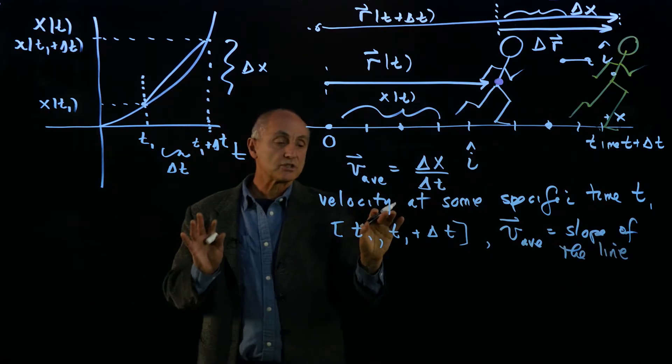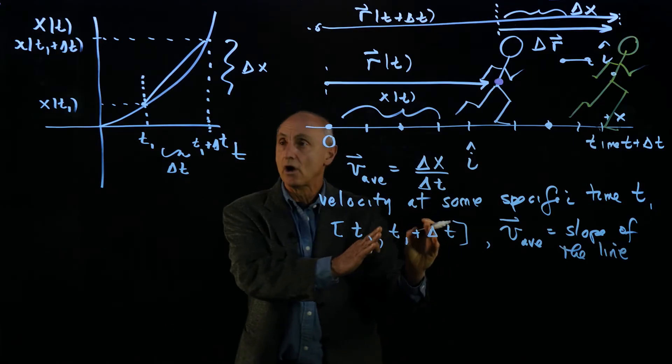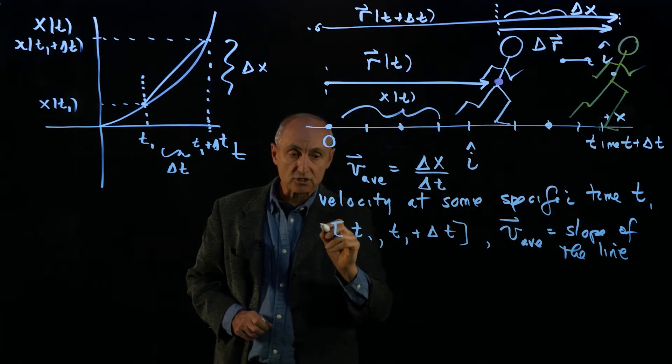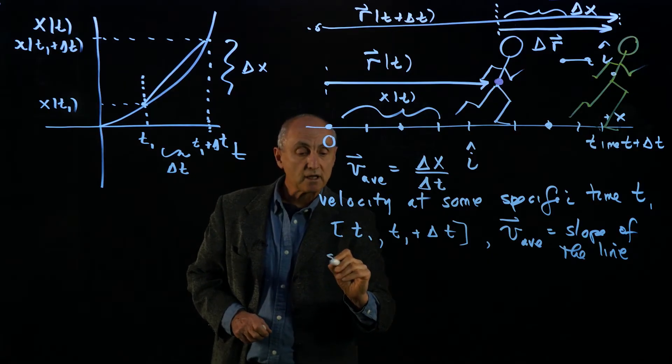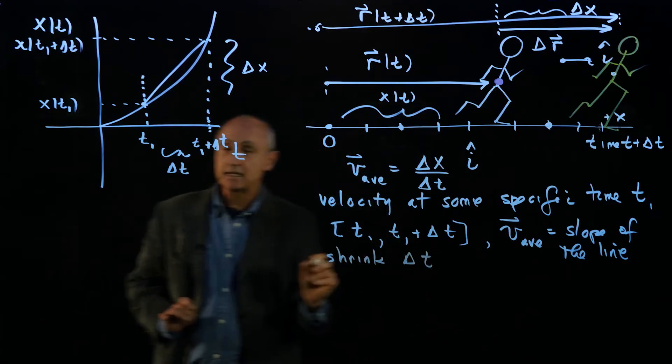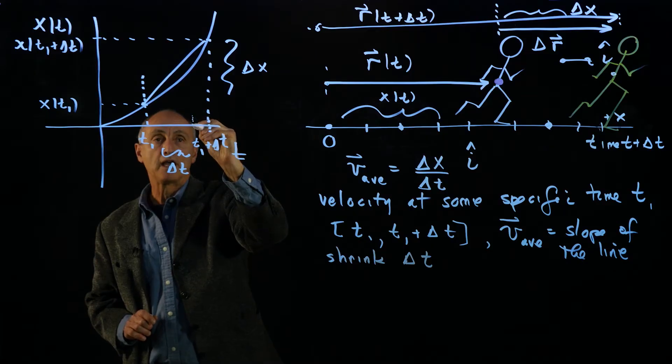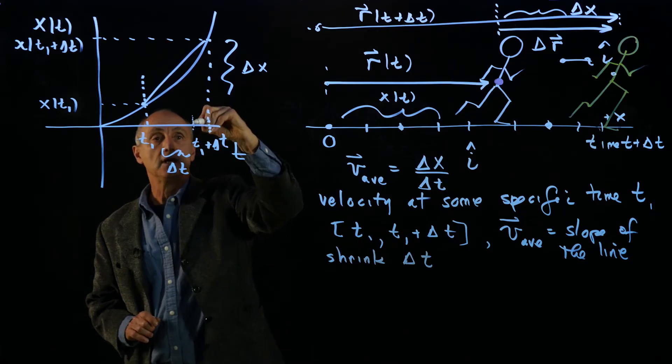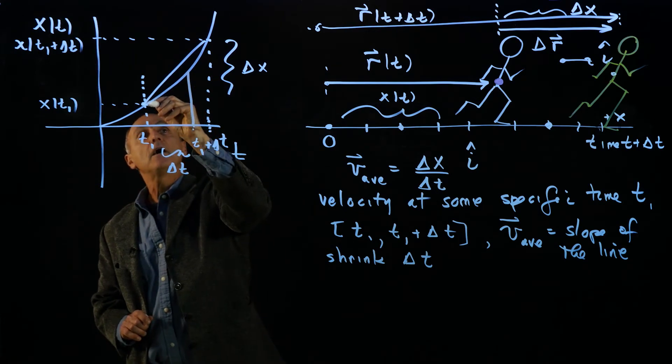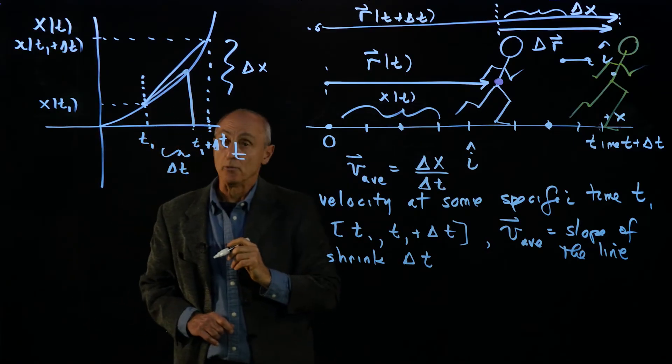Now this is just an average velocity and now what we would like to do is shrink down our interval delta t. So now let's make another case where we shrink delta t and let's again calculate the average velocity.